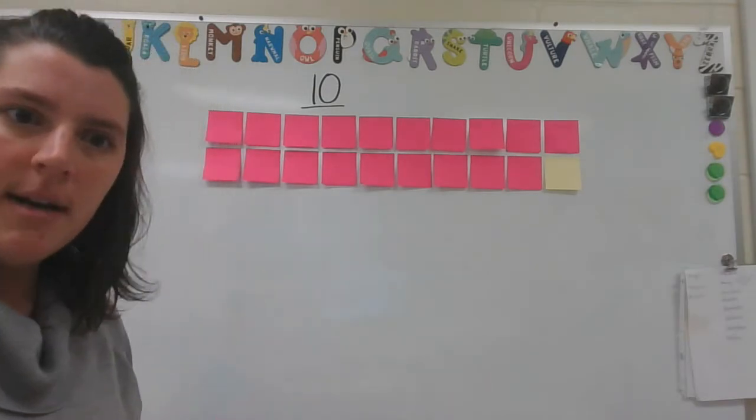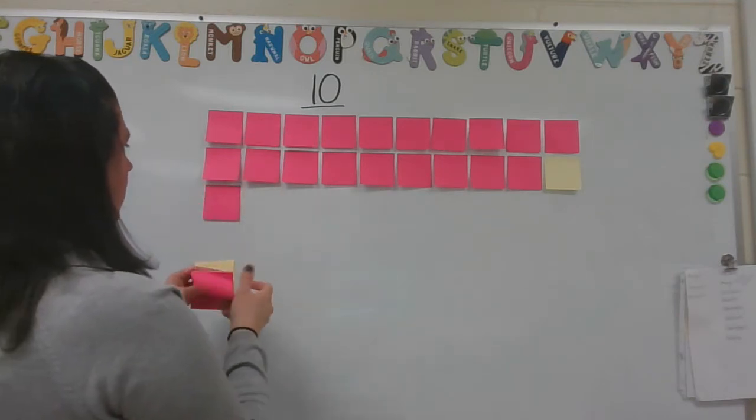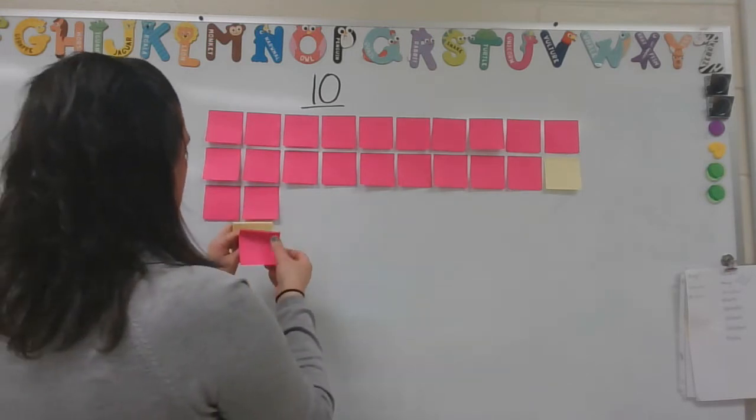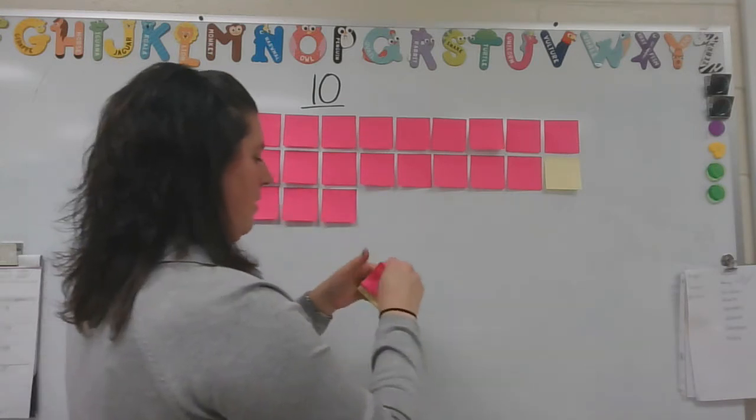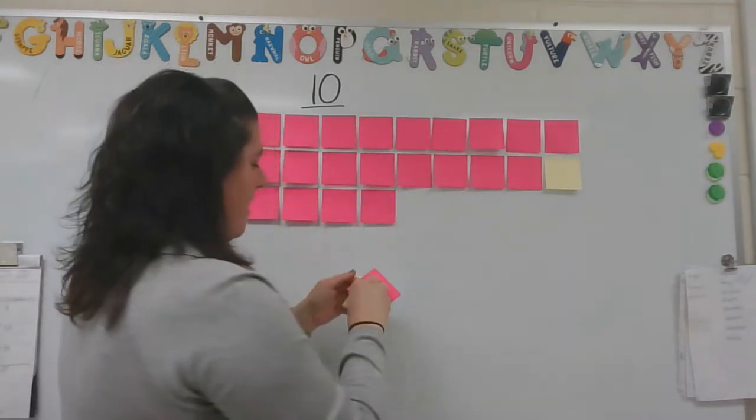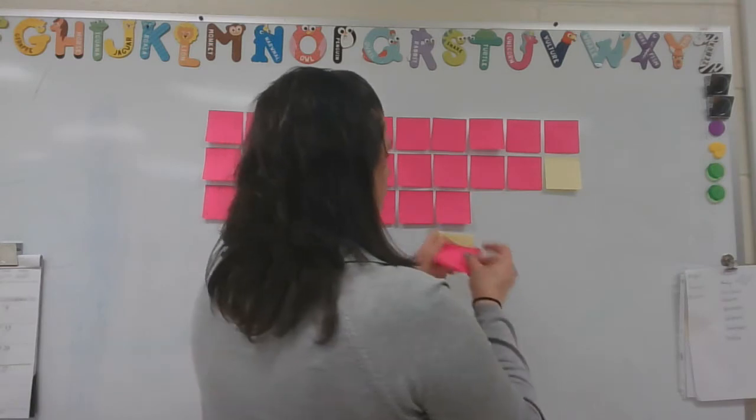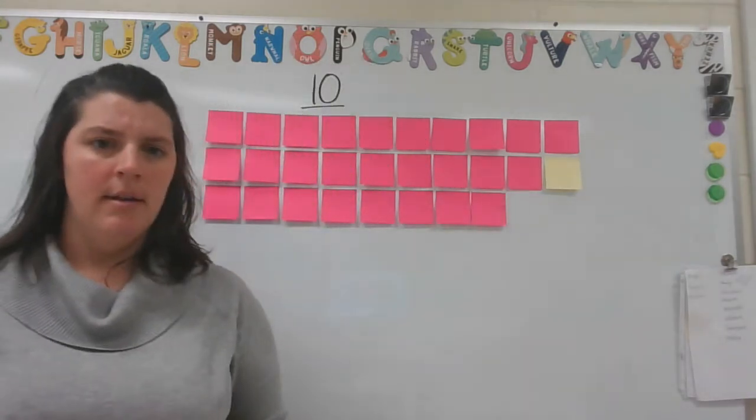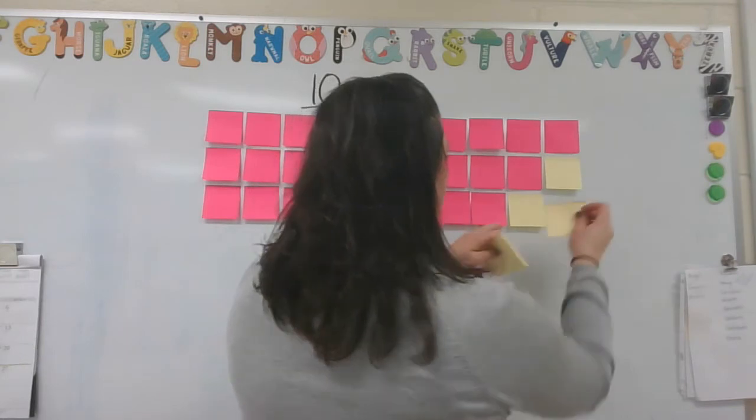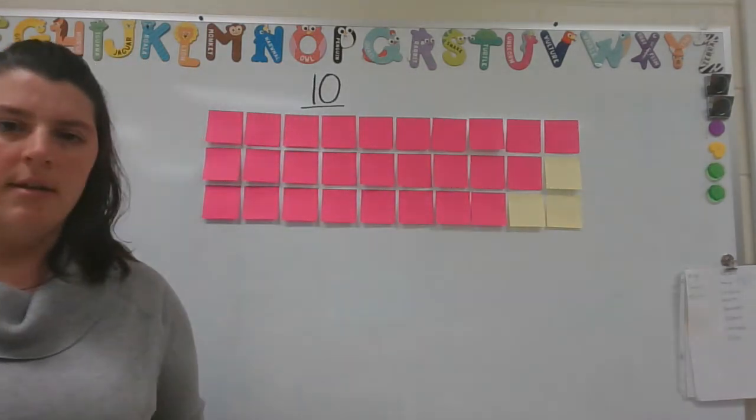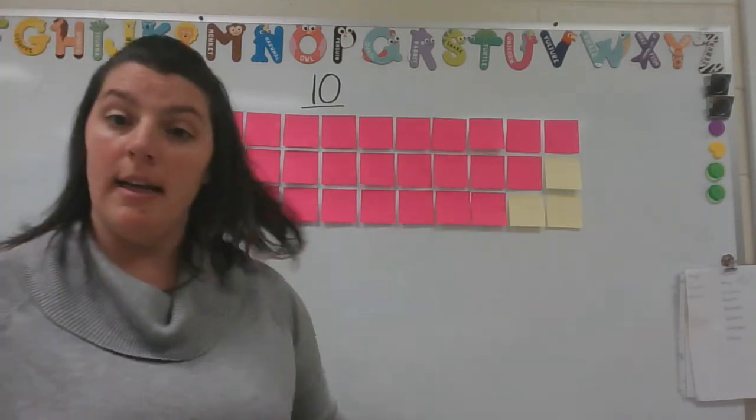But guess what? Someone else told me another combination. Watch this one. For the pink, they had 1, 2, 3, 4, 5, 6, 7, 8 pink sticky notes. And then they had 1, 2 yellow sticky notes. Does that still make 10 sticky notes? Mm-hmm. Are there groups of pink and yellow? Sure thing.